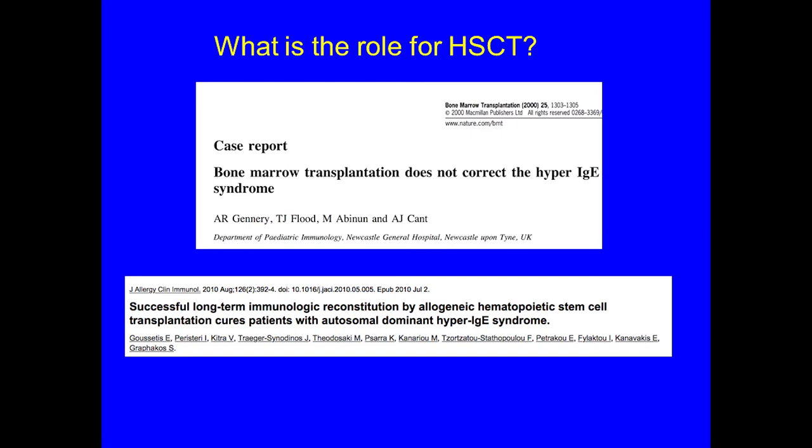One question that's come up in recent years is the role of bone marrow transplant. Transplant is used for other severe immune deficiencies like SCID. A 2000 paper from a British group concluded that bone marrow transplant does not correct hyper-IgE syndrome, dampening the field. However, those same authors later said they thought they were wrong — the transplanted patient actually did better and had fewer infections for years afterward.